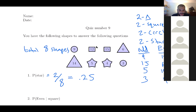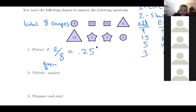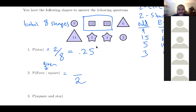For the second one: probability we get an even number given it's a square. The vertical bar means 'given,' so first look at all of the squares — there are two squares. Of those squares, ask how many have an even number — there's only one. So that's one out of two, which is 0.50.